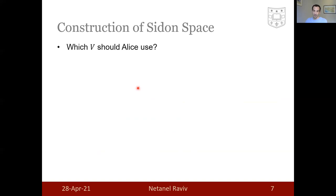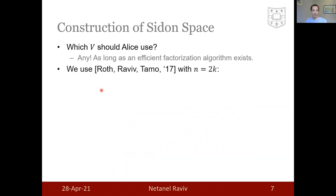The question is, which V should Alice use, which Sidon space? And the answer is literally any, as long as she knows some efficient factorization algorithm. We naturally use the construction that we had in the paper way back when, which is rather simple, omitting some technicalities.